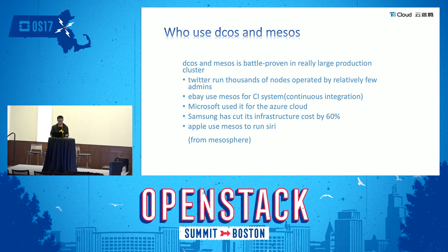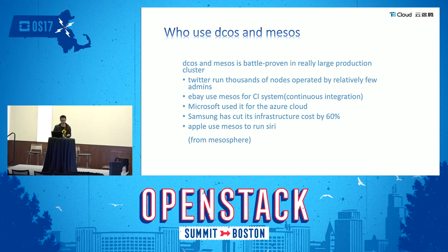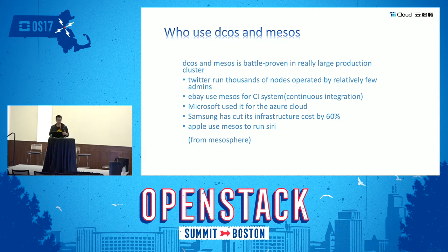In the past, most organizations treated their applications and services like pets — doing everything they could to keep them healthy. For scalable systems, it's better to assume that your service will fail and be prepared to replace it with a new instance. This is what makes Mesos really powerful. We can see who uses Mesos: Twitter handles 10,000 nodes with a few administrators. Airbnb uses it for their CI system. Microsoft uses it for its cloud. Samsung cut costs by 16%, and Apple uses Mesos for Siri.